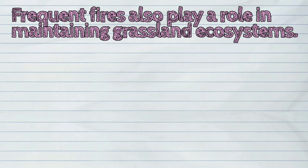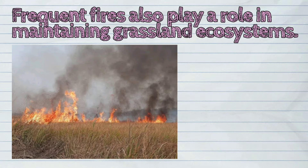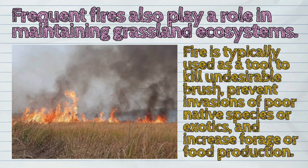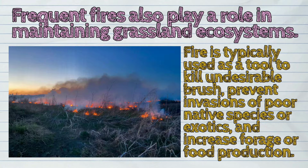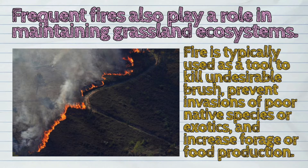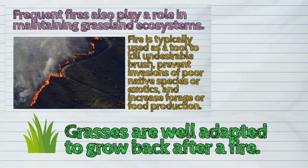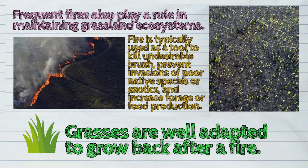Frequent fires also play a role in maintaining grassland ecosystems. Fire is typically used as a tool to kill undesirable brush, prevent invasions of non-native species or exotics, and increase forage or food production. Grasses are well adapted to grow back after a fire.